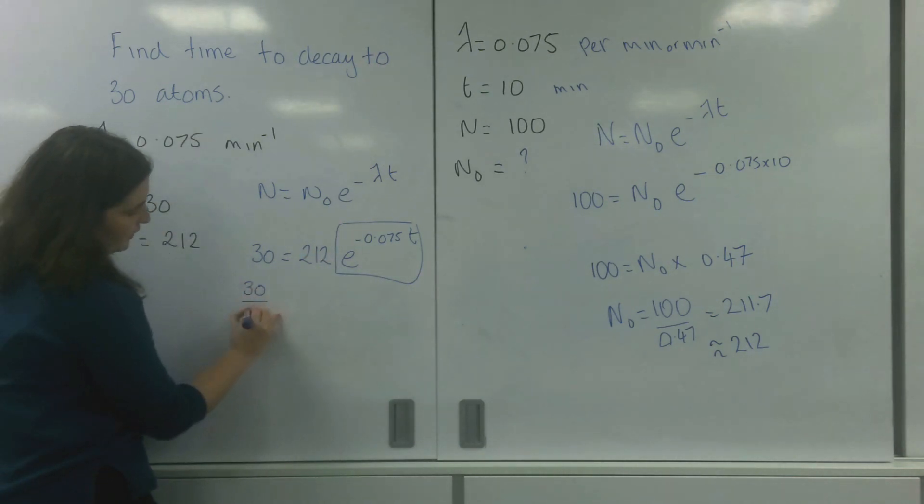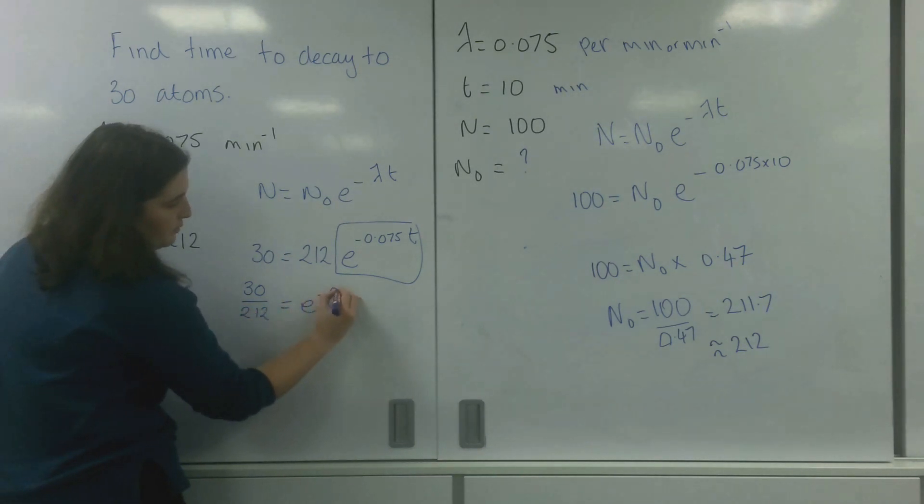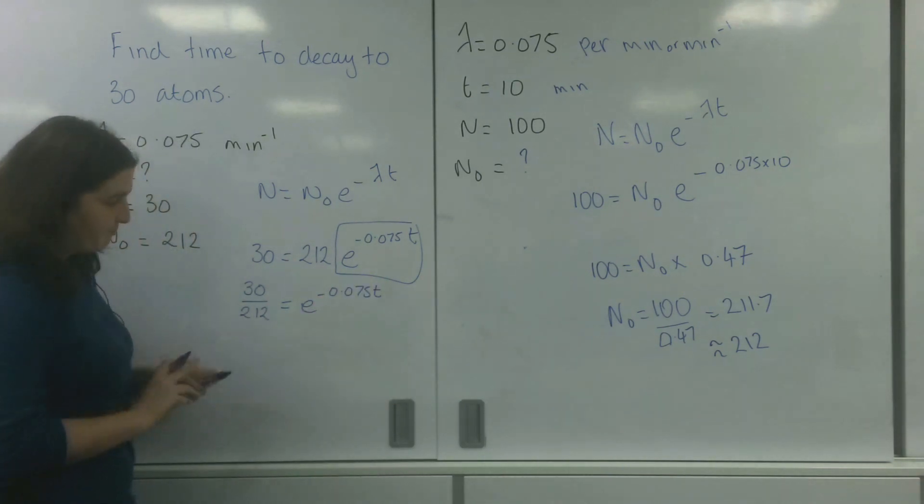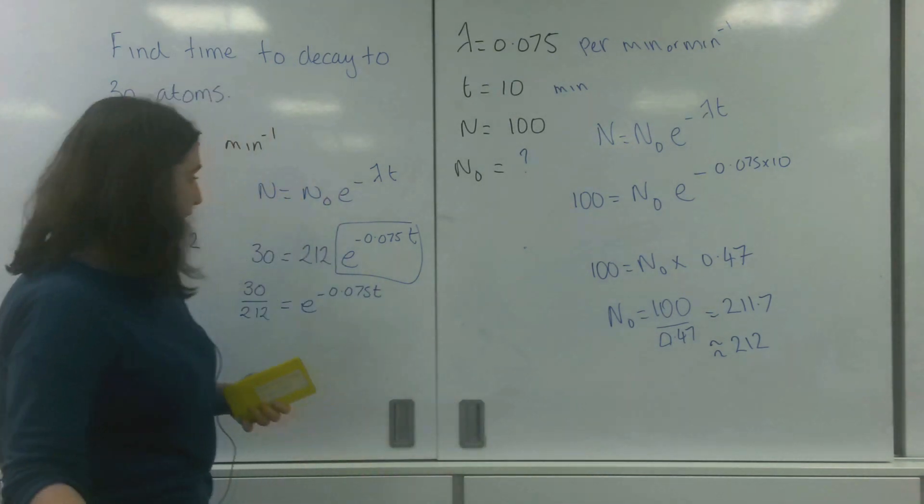So 30 divided by 212 equals e to the minus 0.075 t.